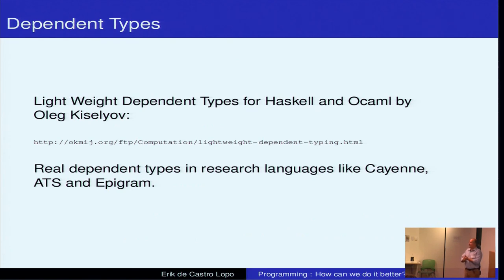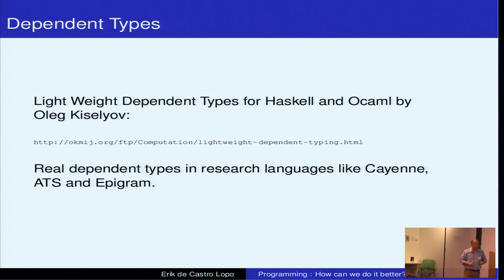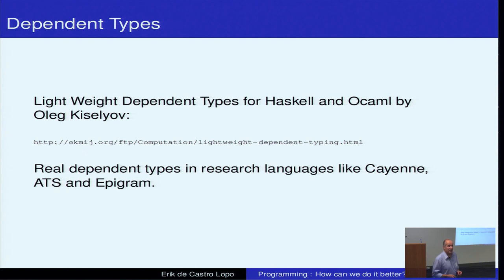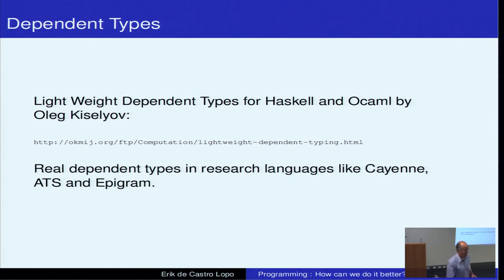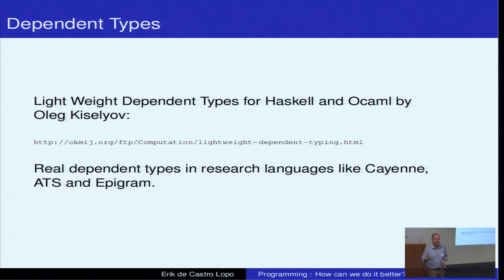A fellow named Oleg Kiselyov, who is rather well known in the Haskell and OCaml communities, has written some papers and examples called lightweight dependent types. The only programming languages that make real use of dependent types are things like Cayenne, ATS, and Epigram — research languages. I've heard stories about Epigram throwing up errors about types being undecidable on even rather trivial examples, and Cayenne has its own problems. They're very much research languages — not there yet, but some of these features with a bit of luck are coming.